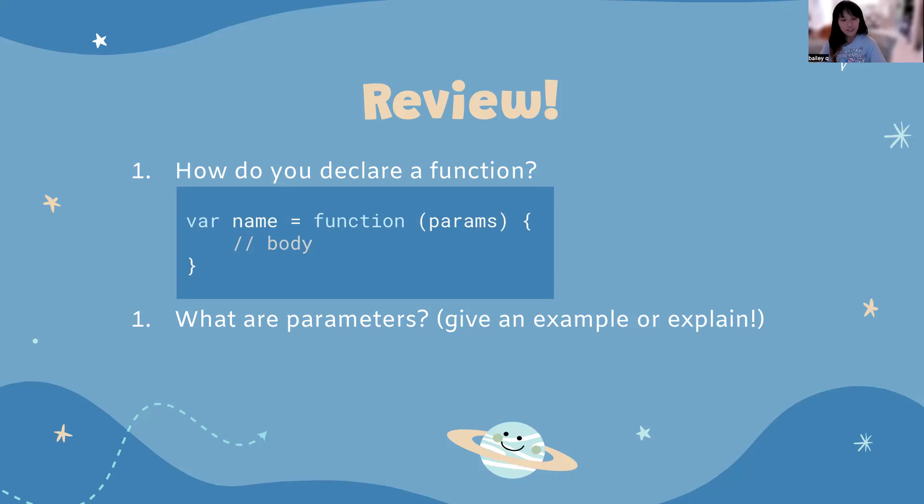Our second question is, what are parameters? Parameters are things we pass as inputs into the function. Inside of the parentheses, we have those parameters. Think of those as an input. So the user will input numbers or values. Those numbers or values will go back into the original function. It'll go through whatever instructions you listed, the body. It'll take those values and output it onto your project.